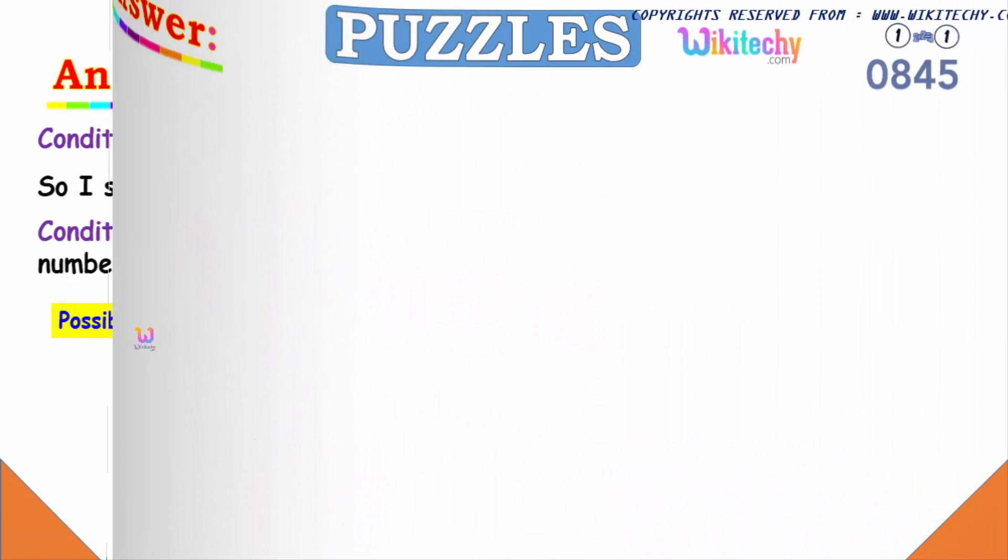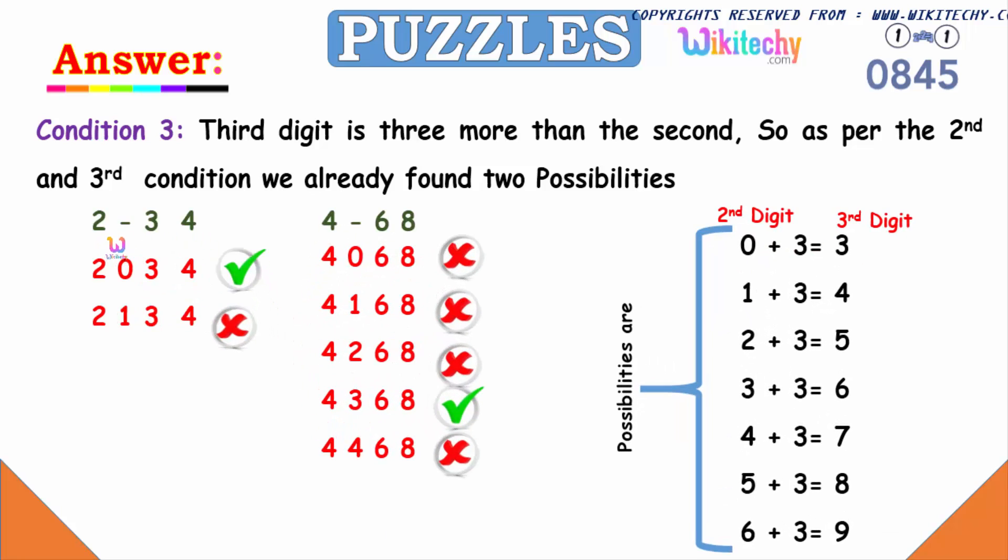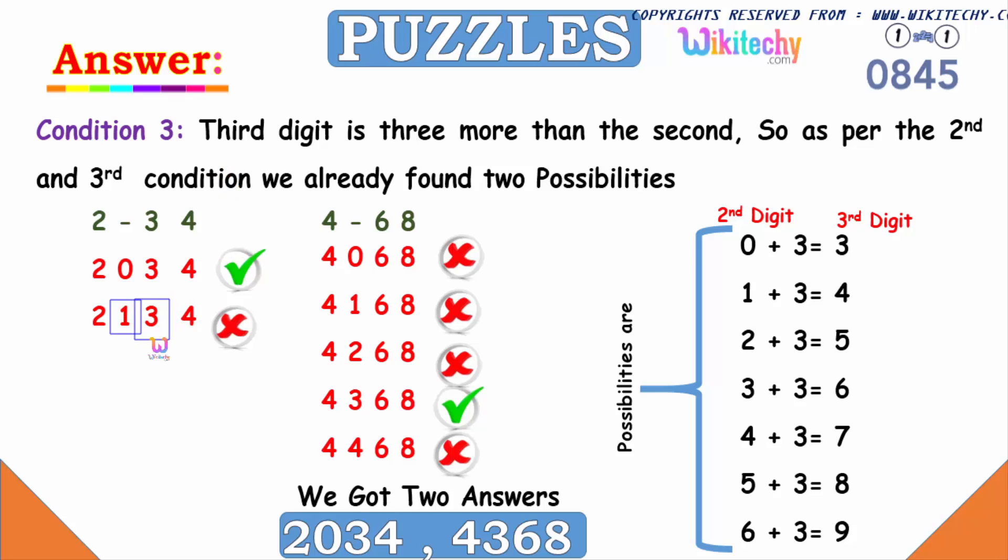So it can be two, three, four or two, zero, three, four, or two, one, three, four. Since the third condition is the third digit is three more than the second, as per the second and third condition, we got this as one of the values.